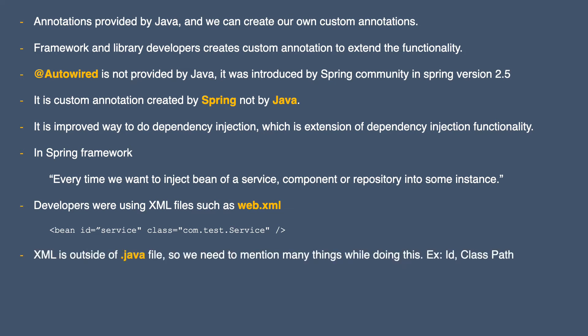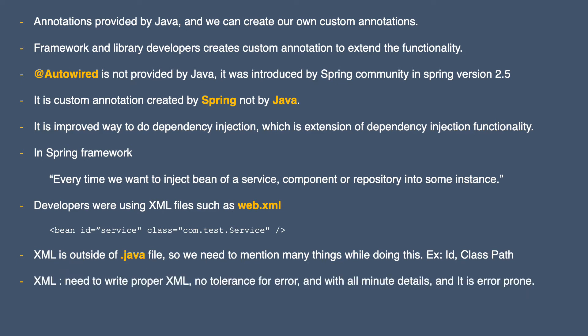In the XML file you need to mention the class path, the ID (which is kind of a name of the bean), and other important stuff. Additionally, since this is an XML file, you need to write proper XML — there is no tolerance for error, making it an error-prone approach. This new approach of autowire annotation was introduced so you can do the same thing with less effort and fewer errors.